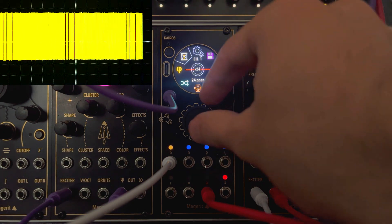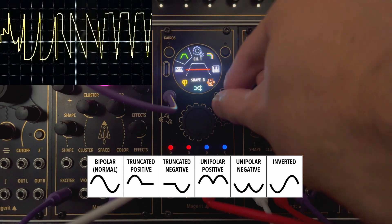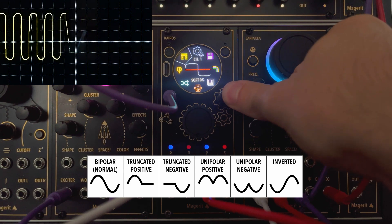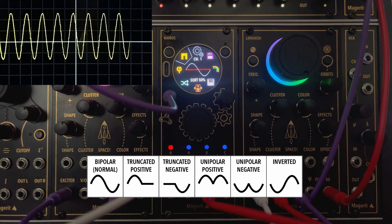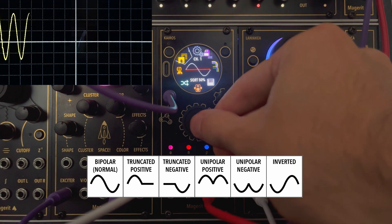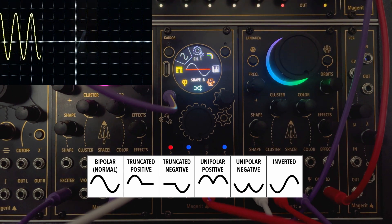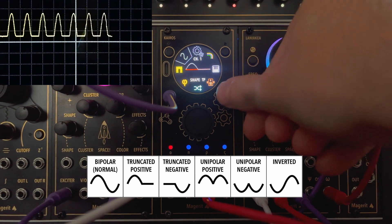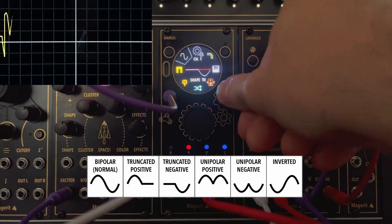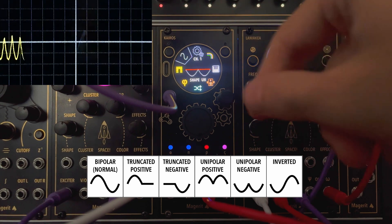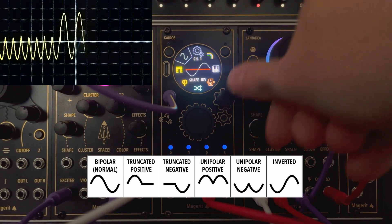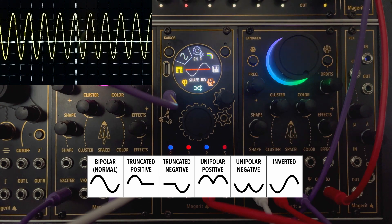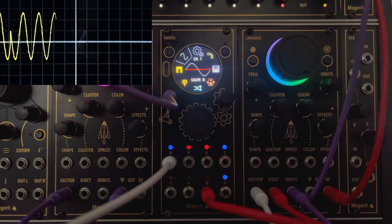You can also choose from several truncation and polarity options. Let's switch to a sine wave so it's easier to see, and hold down the small encoder to reset the parameter to its default value. You can cut the negative part, cut the positive part, make negative values positive, make positive values negative, or invert the polarity entirely. This gives you deep control over the signal's character.